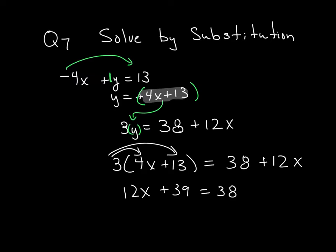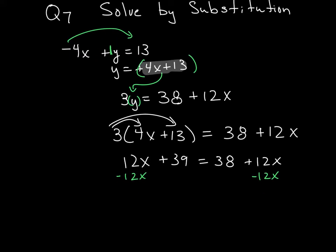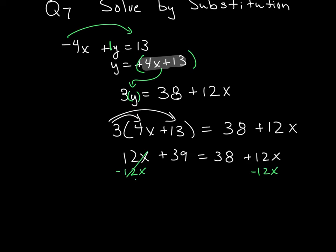Now, if this is starting to look a little suspicious to you, it is because it is. I can tell right away, but what I want you to notice is if I subtract 12x from both sides, that's 0. This is 0, and I'm left with this equation of 39 is equal to 38. Since I know that this is not possible, this is an example of the two lines having no solution.